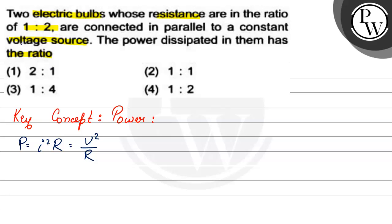Now, let's look at the question. Two electric bulbs whose resistance are in the ratio of 1 is to 2 are connected in parallel to a constant voltage source. So, two electric bulbs are like this. And they are connected in parallel to a constant voltage source which is V. So, we have bulb 1 resistance R1 and bulb 2 resistance R2.